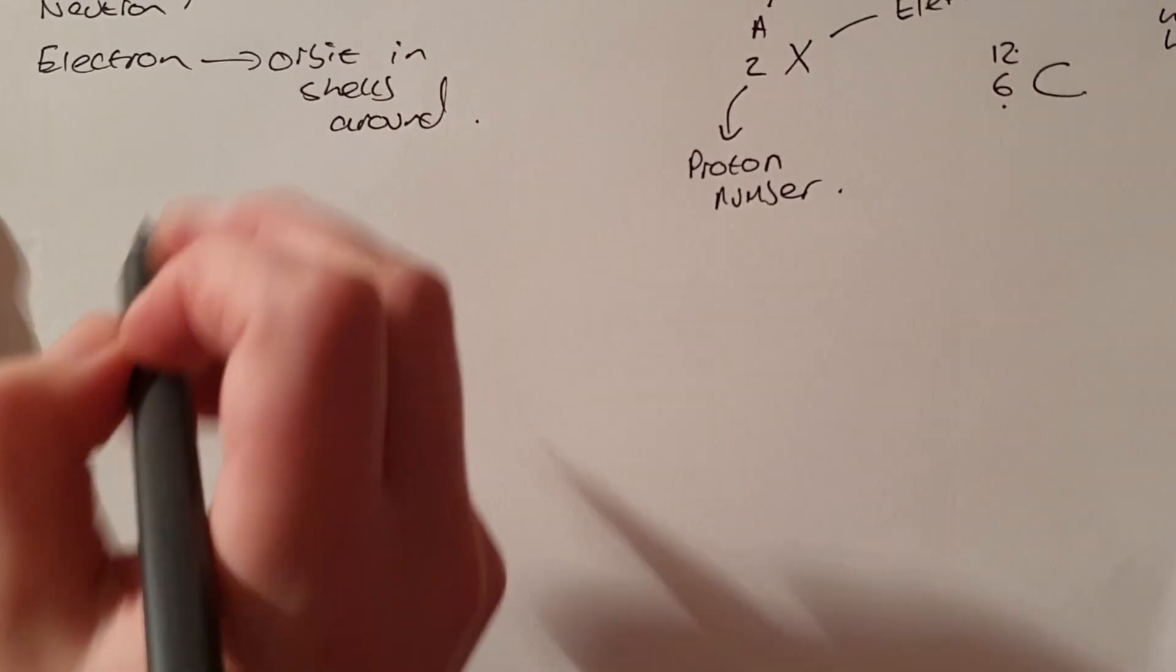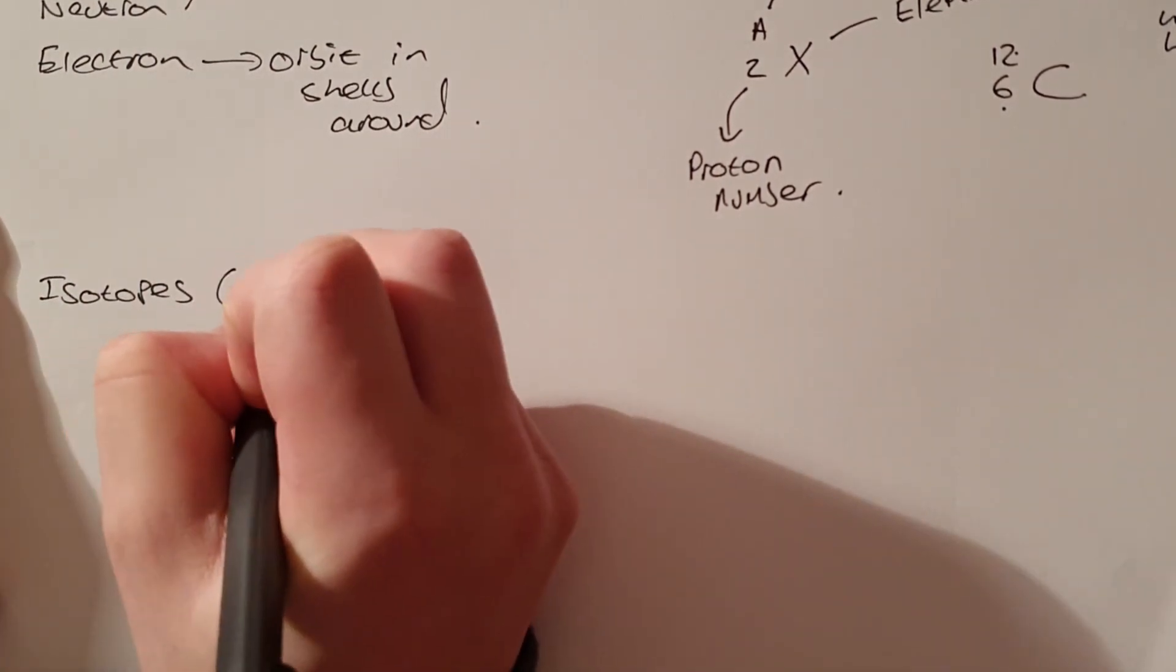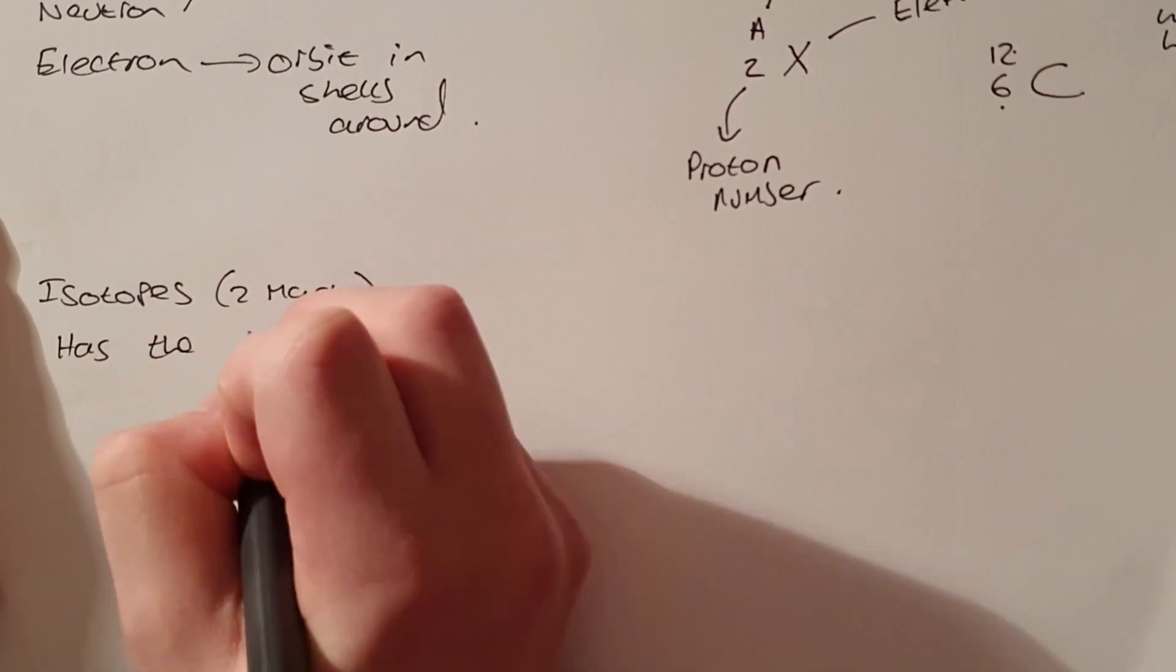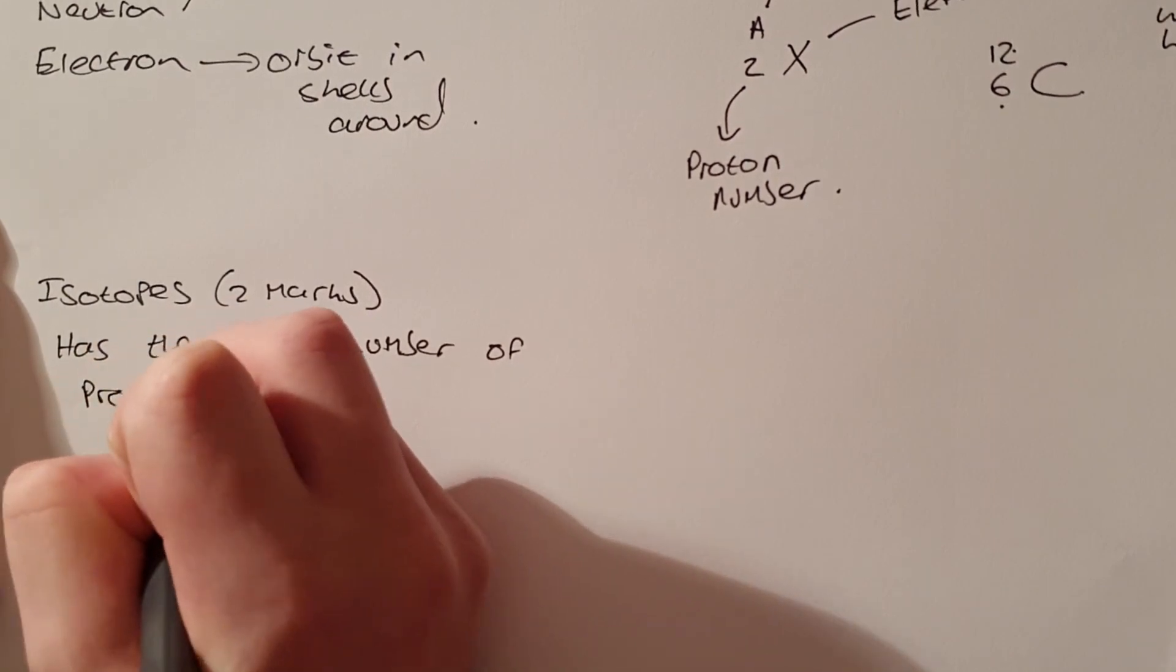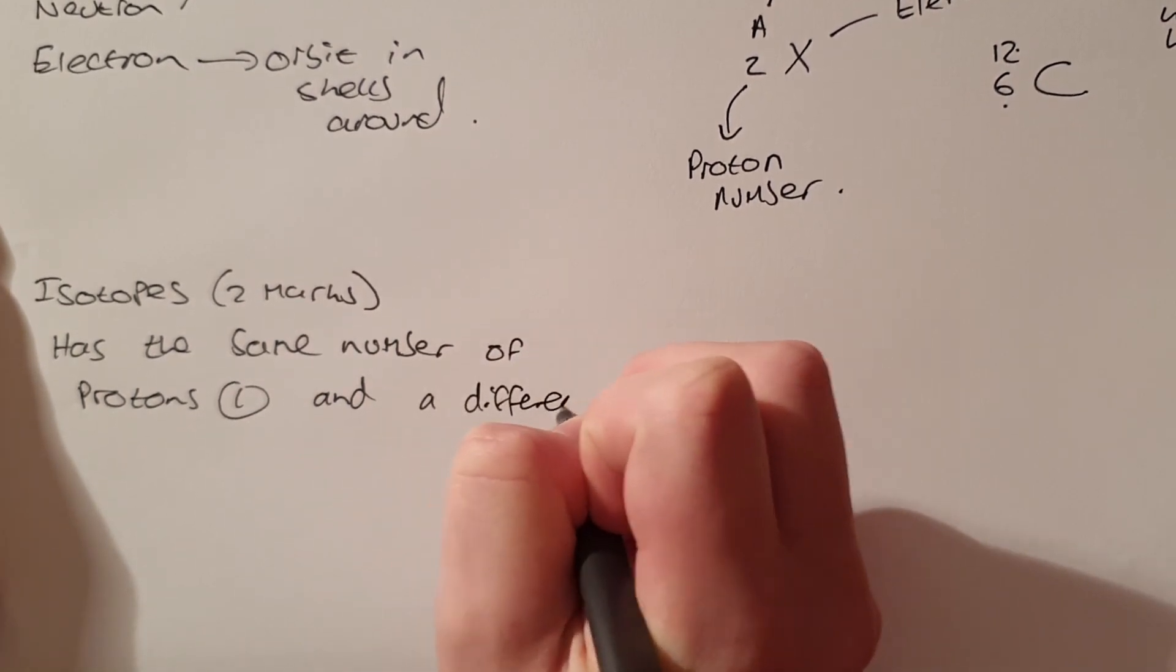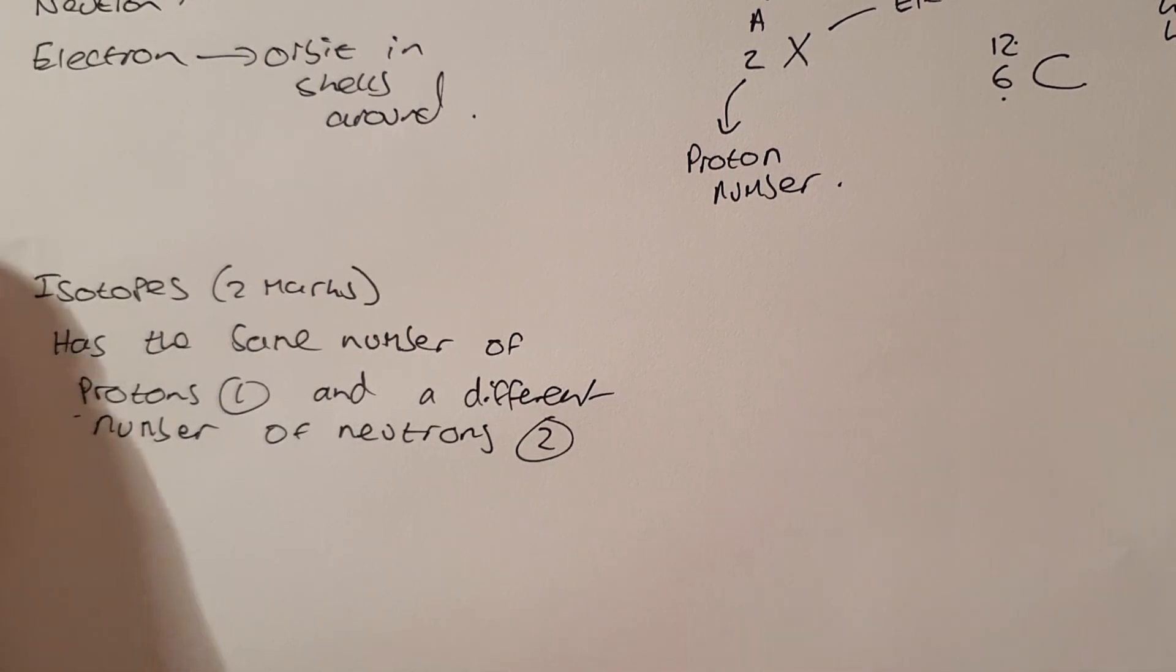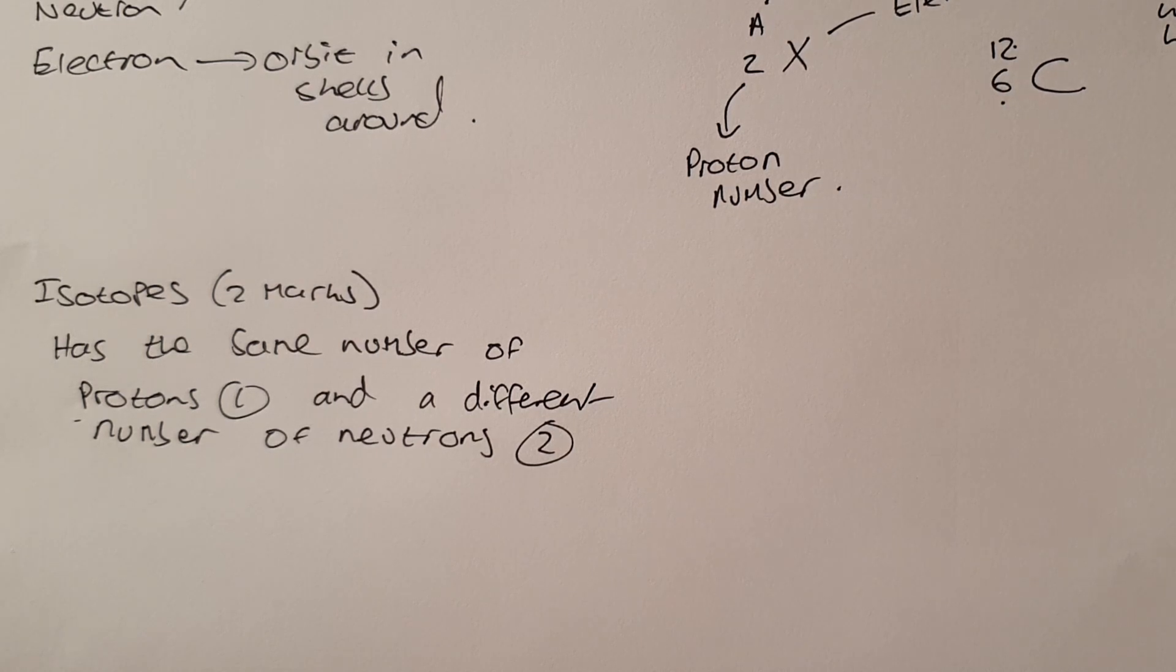Another key word in this part of the unit is the word isotopes and this will often be two marks. But students make silly mistakes by not being specific enough in the definition. We know that an isotope has the same number of protons, that will give you one mark, and a different number of neutrons, second mark. Students often go wrong here by just saying it has a different Nucleon number. Yes that is correct but it's not specific enough especially at A level.